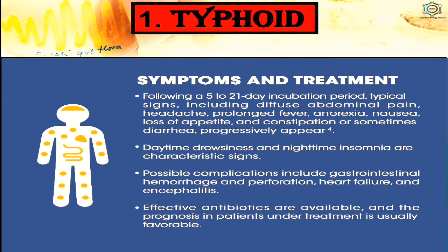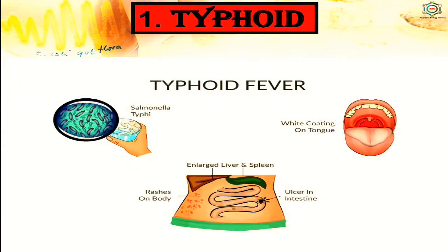Effective antibiotics are available and the prognosis in patients under treatment is usually favorable. Common symptoms include constant high fever in the first and second week, followed by gradually decreased fever in the third and fourth week, along with headache, extreme weakness, abdominal pain, constipation, and inflammation in ileum and colon. Liver and spleen become enlarged. Typhoid can be confirmed by Widal test.